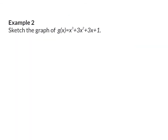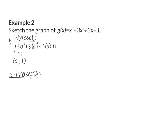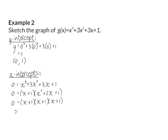In example two we are once again asked to draw the graph of a cubic function. Starting with the y-intercept — when you substitute x equals zero, the y-intercept is always the constant value at the end, so I can immediately write down the coordinate (0, 1). Next I determine the x-intercept by changing y to zero and factorizing, and there will only be one x-intercept at (-1, 0).